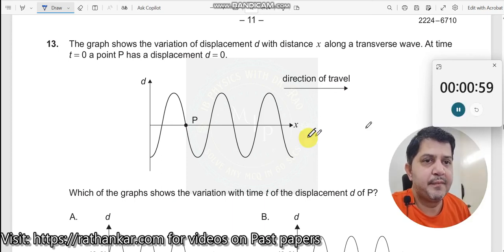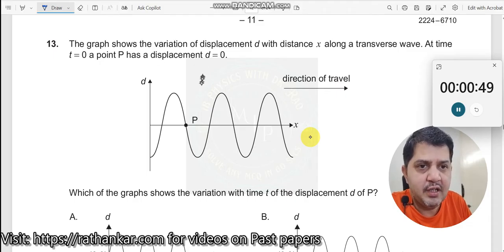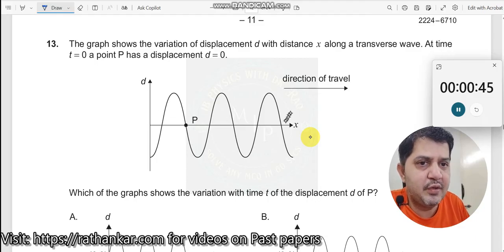Question number 13: The graph shows the variation of displacement d with distance x along a transverse wave. At time t equal to 0, the point P has a displacement d equal to 0. So there is a wave which is going on here, it is a snapshot of it.